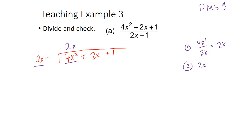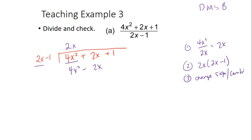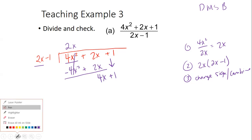So I have two X times two X minus one, which gives us four X squared minus two X. That's the multiply step. Third, you subtract. When you subtract, that means you're going to change signs and combine. So instead of a positive this became a negative, instead of a negative this became a positive, and now we combine: two X plus two X is four X. Then the B stands for bring down — bring down what you have left.